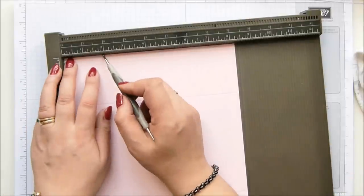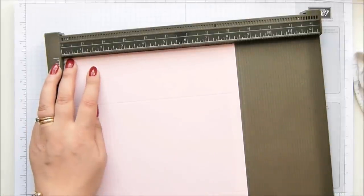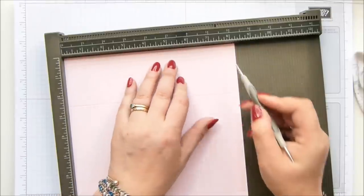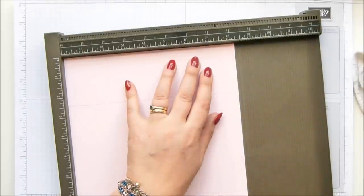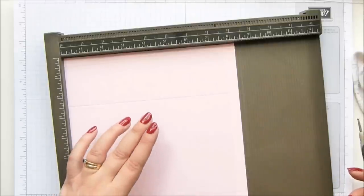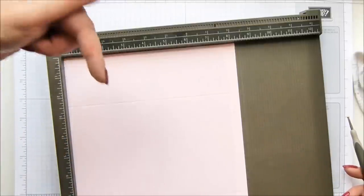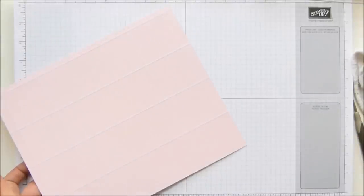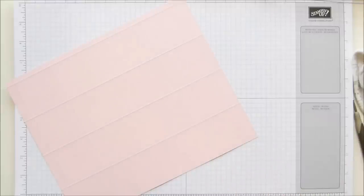Then you turn it around and score it at two, four, six and eight inches, which is five, ten, fifteen and twenty centimeters. Now don't worry about writing them down, everything is in the description bar which is just below. If you click that open, you will find a direct link to this project.